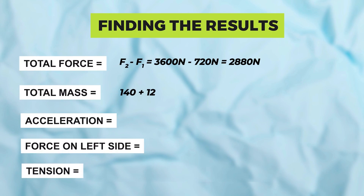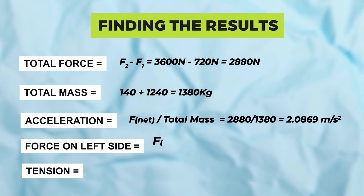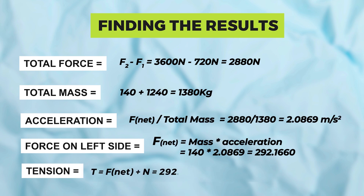Total force: F2 minus F1 equals 3600 N minus 720 N equals 2880 N. Total mass: 140 plus 1240 equals 1380 kg. Acceleration: F_net over total mass equals 2880 over 1380 equals 2.0869 m/s². Force on the left side: F_net equals mass times acceleration, where mass is 140 and acceleration is 2.0869, giving 292.166 N. Tension T equals F_net plus N, where F_net is 292.166 and N is 720, so total tension is 1012.166 N.